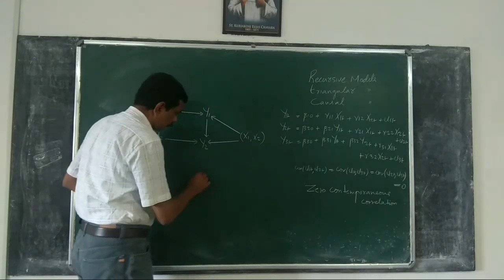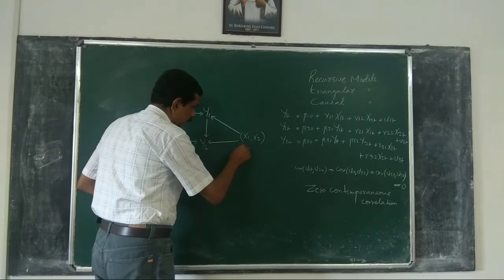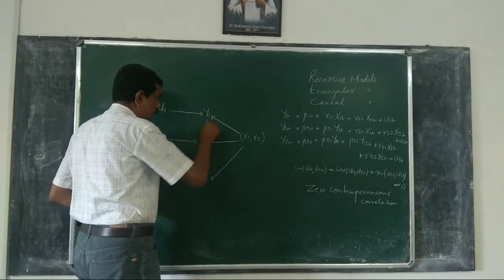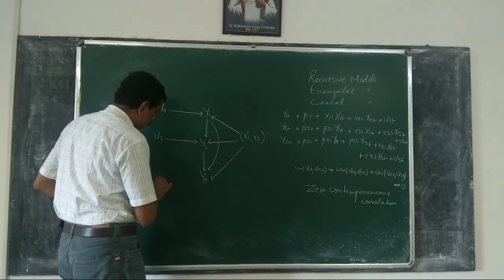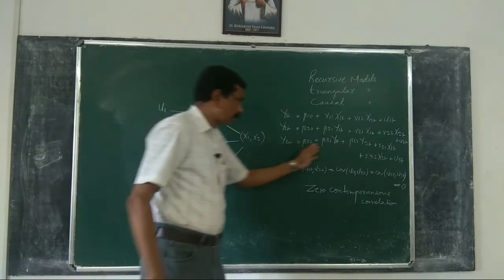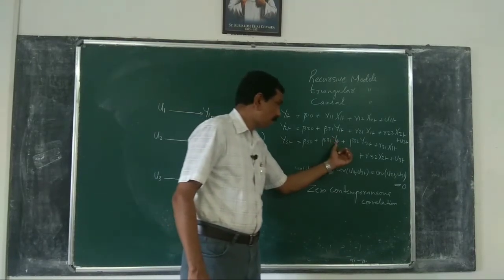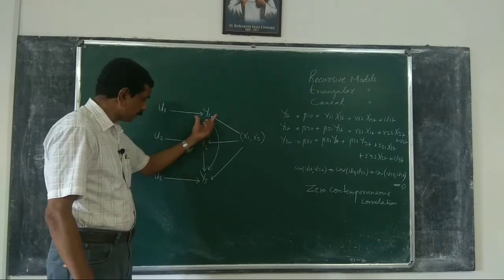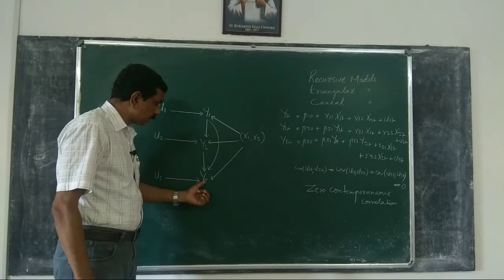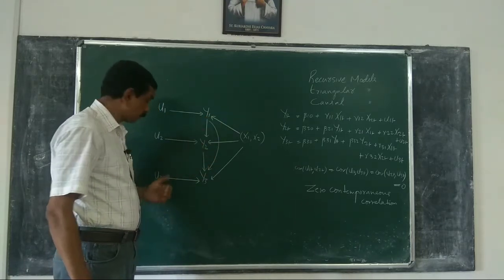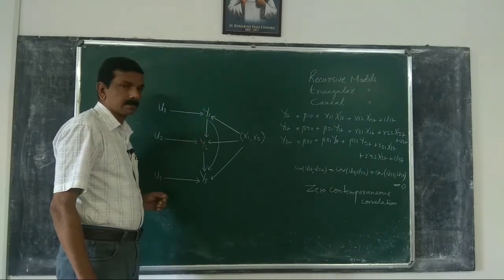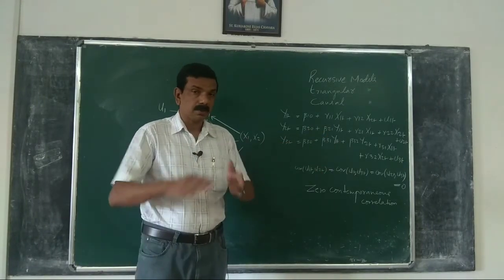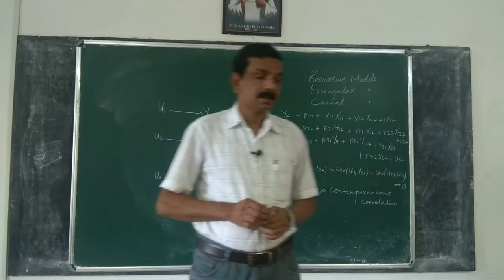Now consider the third equation. Y3 is determined by Y1, Y2, X1, X2, and U3. Whether we can apply OLS depends on whether Y1 and Y2 are correlated with U3. As you can see from the direction of the arrows, U3 determines Y3, but Y3 is not determining Y2 or Y1. So there is no correlation between U3 and Y1 or Y2. Therefore, we can apply OLS to the third equation as well — there is no possibility of explanatory variables being correlated with the stochastic error term.